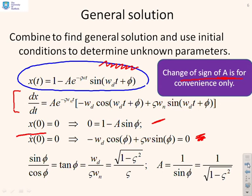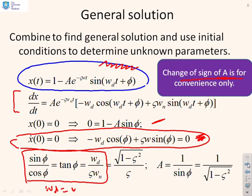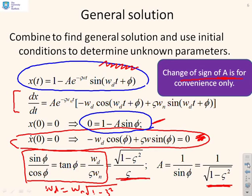Using the second expression and separating sin(φ) and cos(φ), we get tan(φ) = ωd / (ζωn). Substituting ωd = ωn√(1 − ζ²), this becomes tan(φ) = √(1 − ζ²) / ζ. Once we have tan(φ), we can get sin(φ) = √(1 − ζ²). Going back to the expression 0 = 1 − a sin(φ), we can solve for a = 1/sin(φ) = 1/√(1 − ζ²).